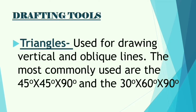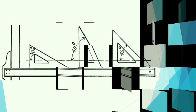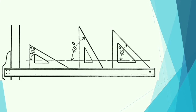Now, the triangles — used for drawing vertical and oblique lines. The most commonly used are the 45-45-90 degree angle and the 30-60-90 degree angle. Here is a sample: the 30-60 triangle and the 45-45-90 degree angle triangle.